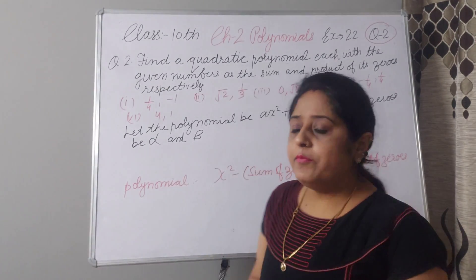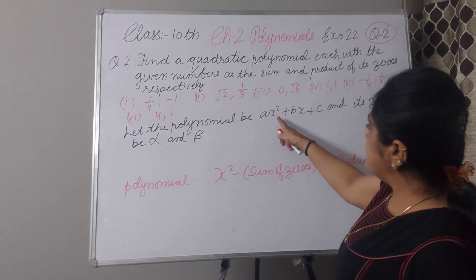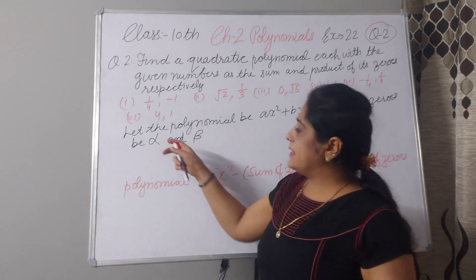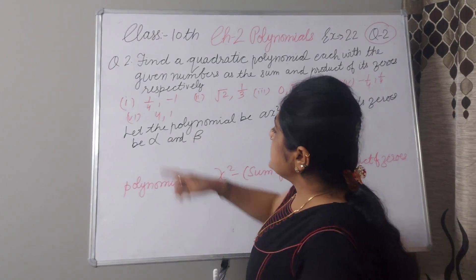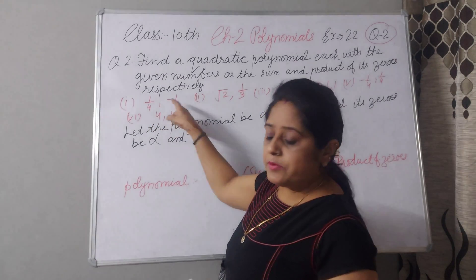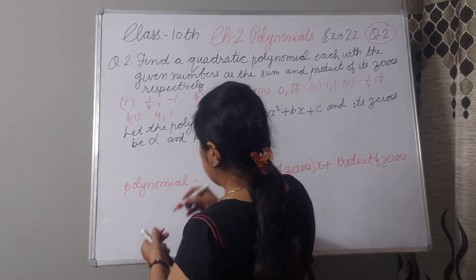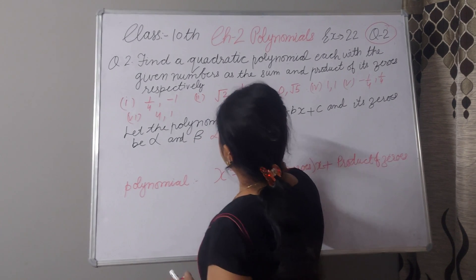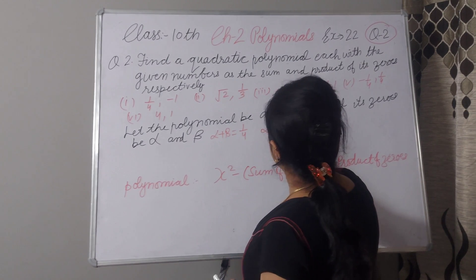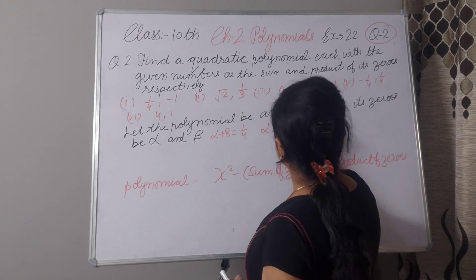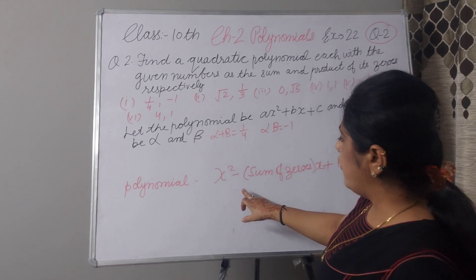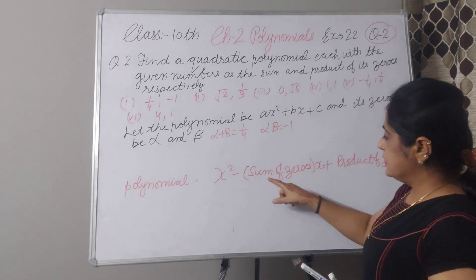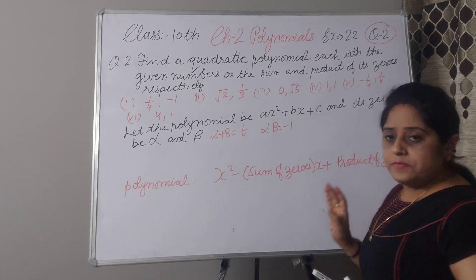Let us assume our polynomial. Let the polynomial be Ax² + Bx + C, with zeroes alpha and beta. The sum of zeroes alpha plus beta equals 1/4, and the product of zeroes alpha times beta equals minus 1. We make the polynomial as x² minus (sum of zeroes) times x plus (product of zeroes).